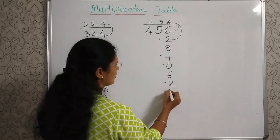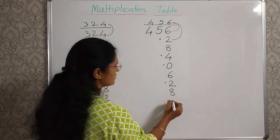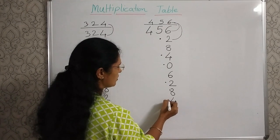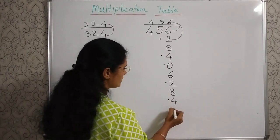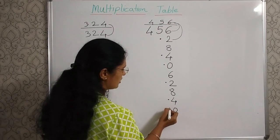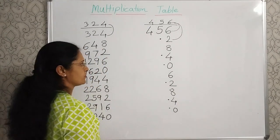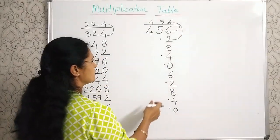8 plus 6, 14. Again a dot here. 4 plus 6, 10. A dot for the carryover. Now the tens place.